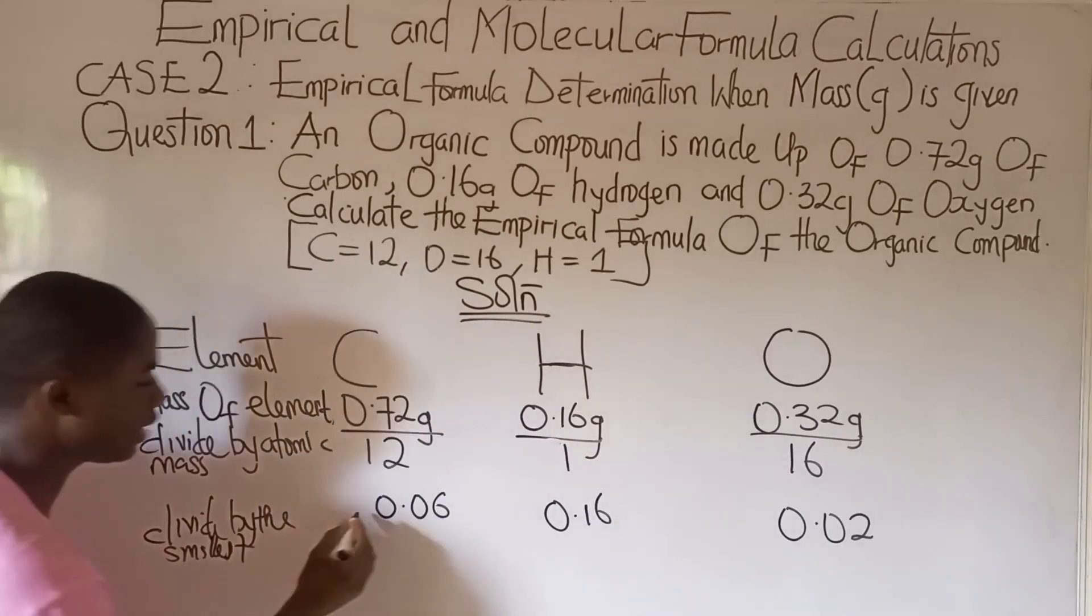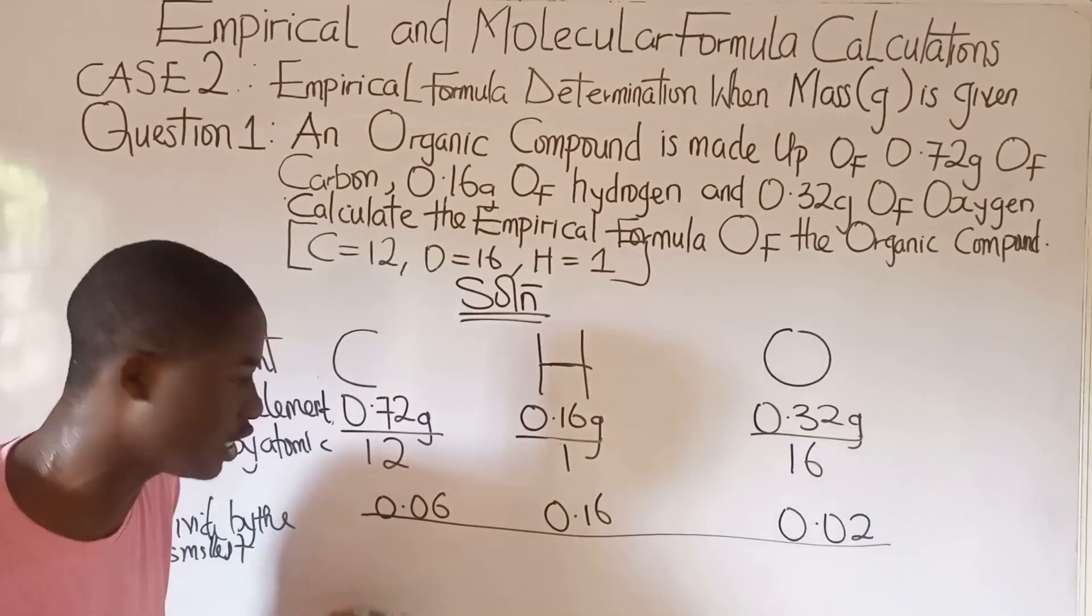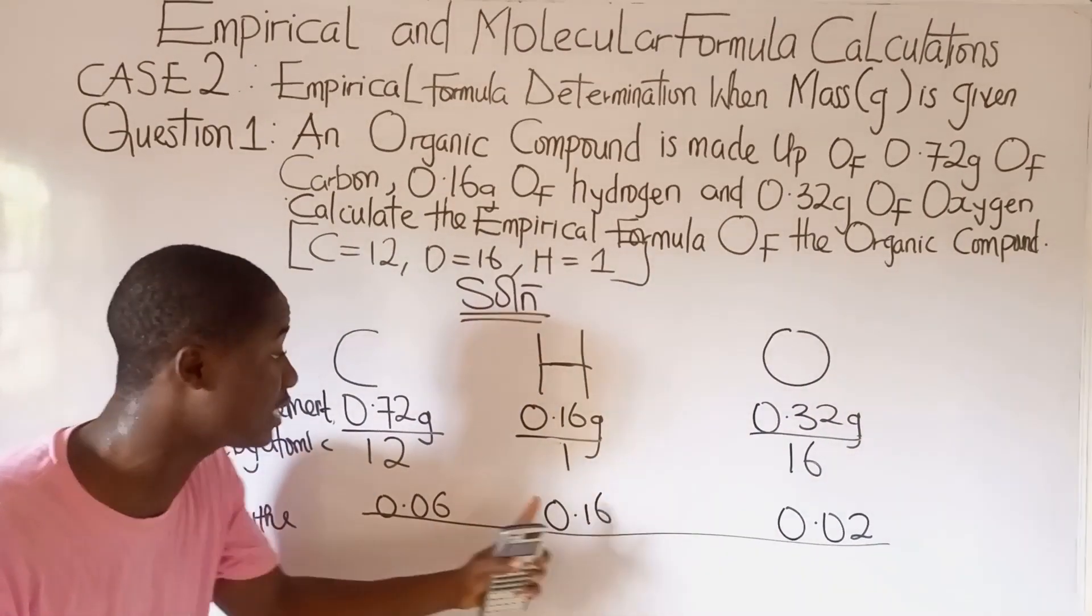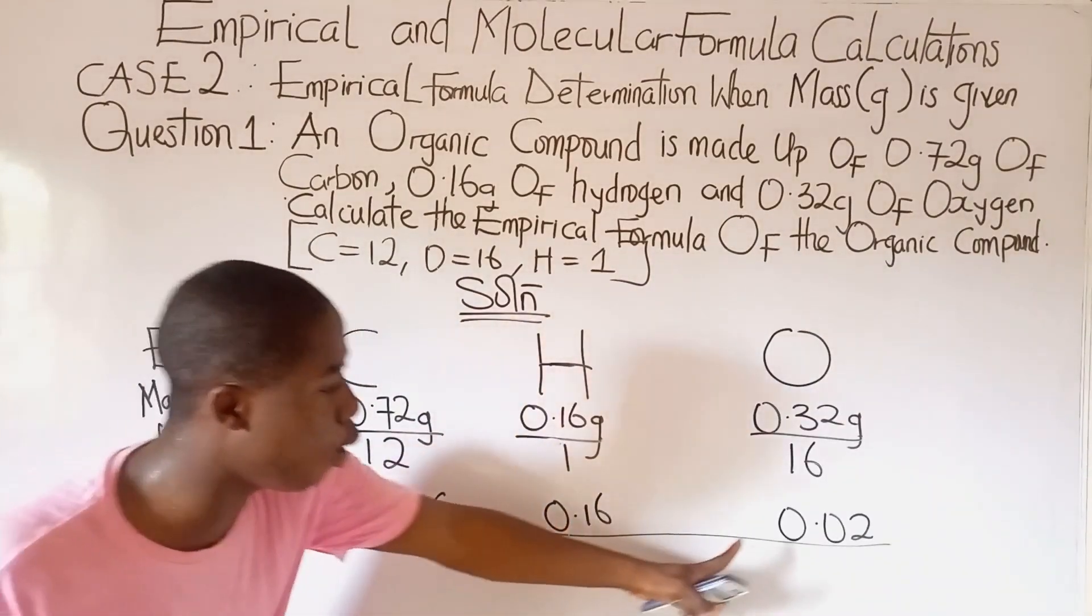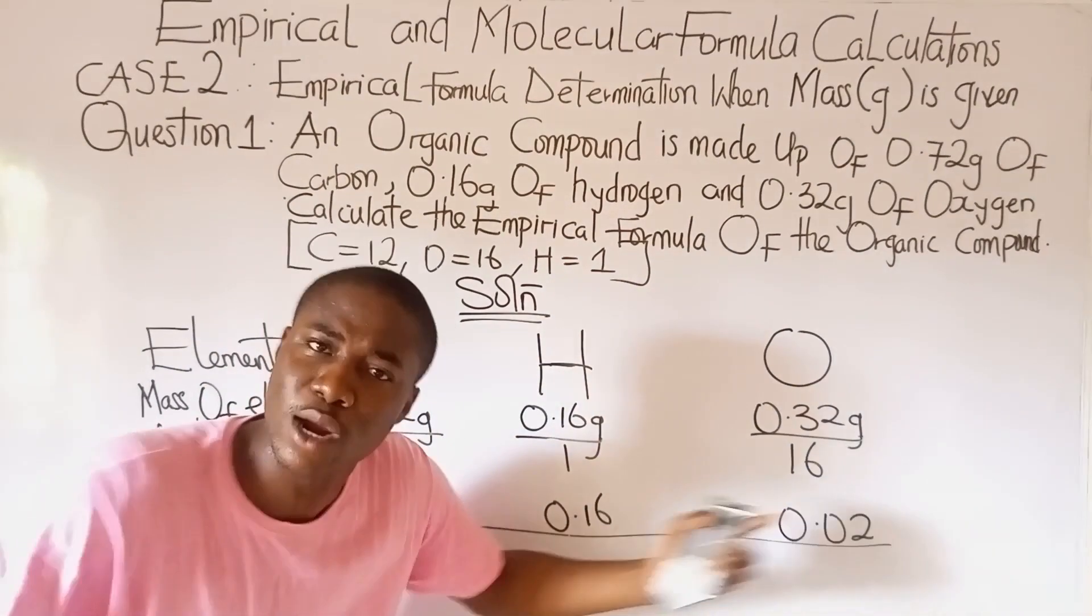So we divide by the smallest. Now the question asks me, what is the smallest value looking at these three values? Which is the smallest? Is it 0.06? Is it 0.16? Or 0.02? Which is the smallest? The smallest is basically 0.02.